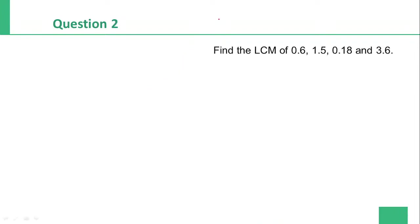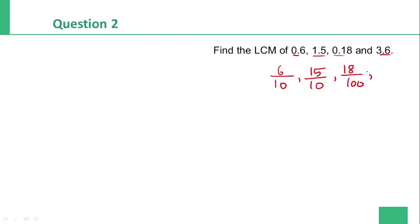Question number 2: Find the LCM of 0.6, 0.18, 3.6, and 1.5. Convert to fractions: 0.6 is 6/10, 1.5 is 15/10, 0.18 is 18/100, and 3.6 is 36/10. For LCM of fractions, take LCM of numerators and HCF of denominators.